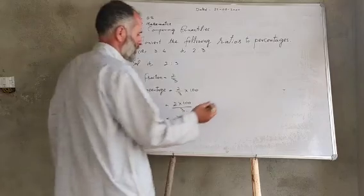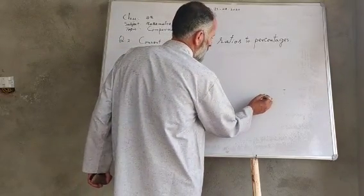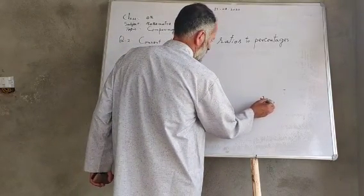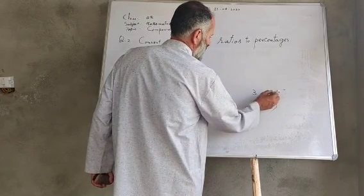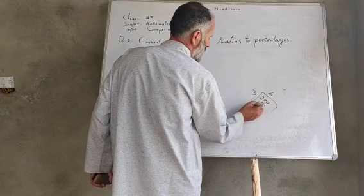200 divided by 3. Let's work through this division: 3 into 200.